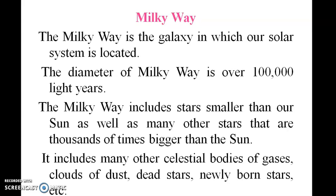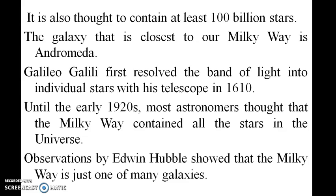The Milky Way includes stars smaller than our sun as well as many other stars that are thousands of times bigger than the sun. It includes many other celestial bodies — gases, clouds, dust, dead stars, newborn stars, etc. It is estimated to contain at least 100 billion stars. The diameter of the Milky Way is over one lakh light years.